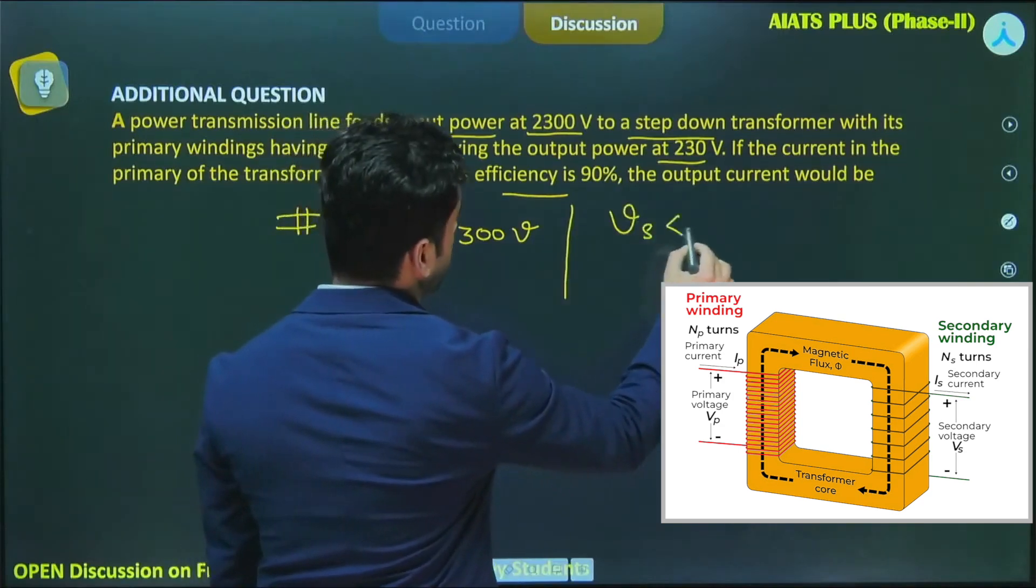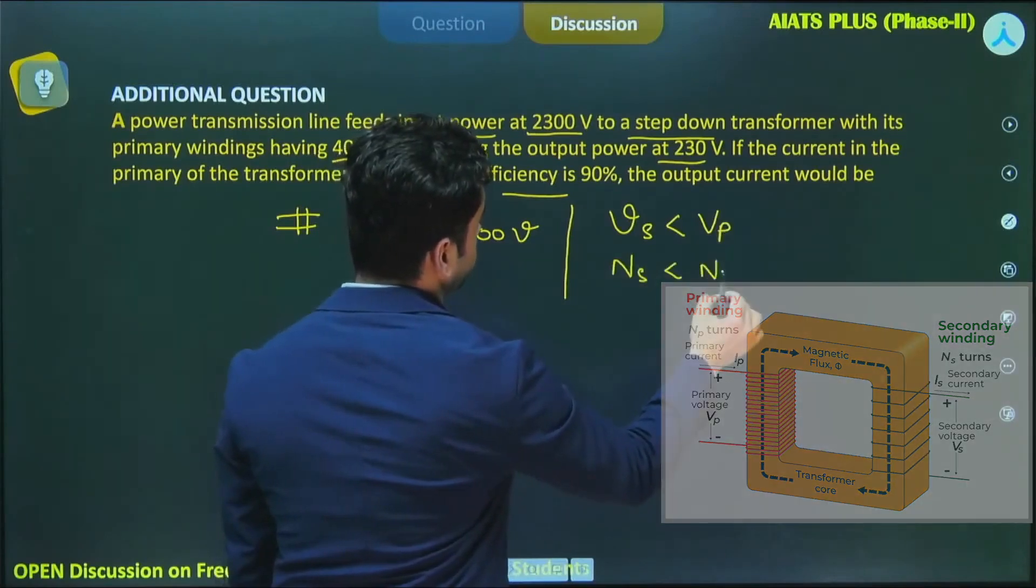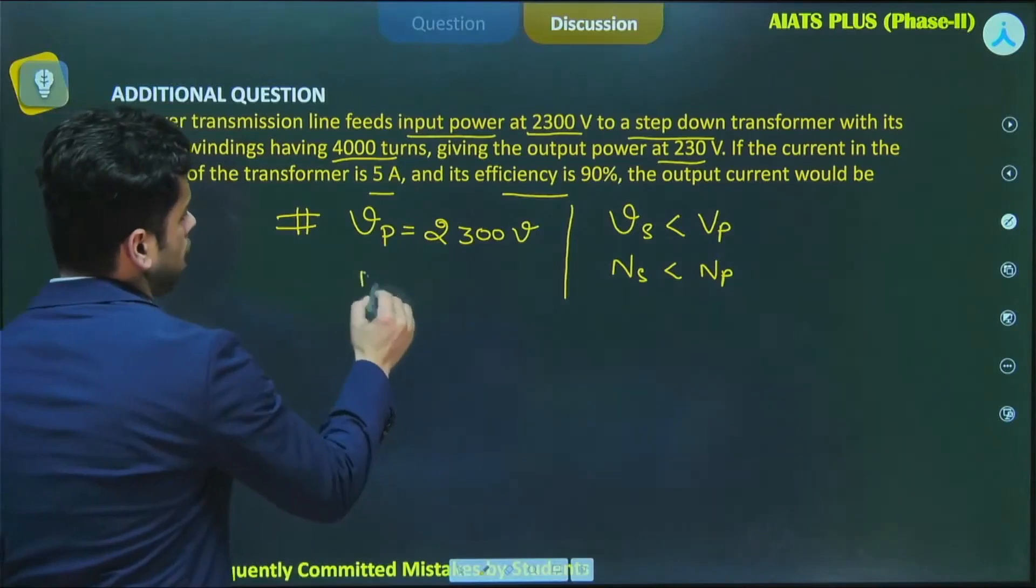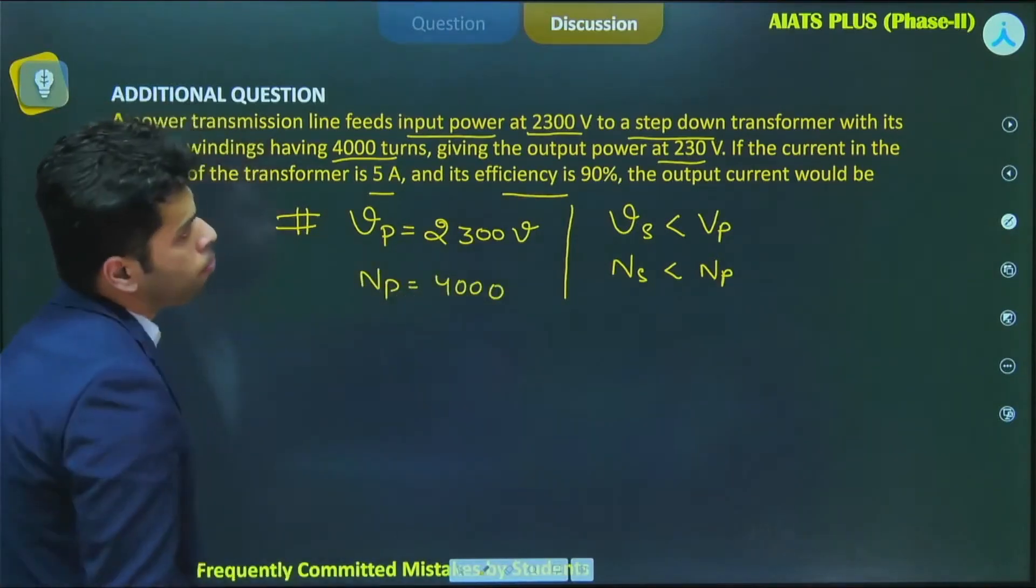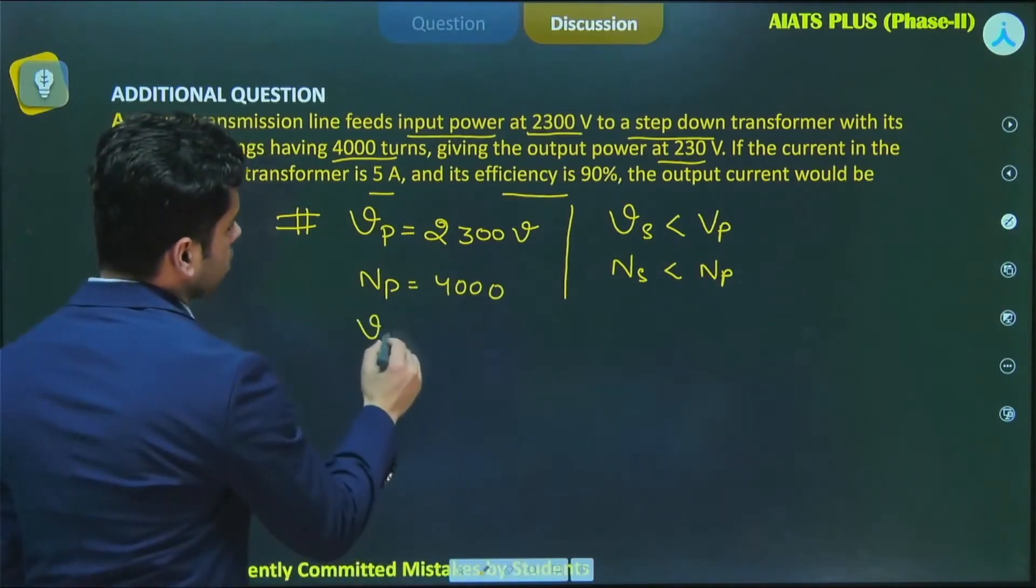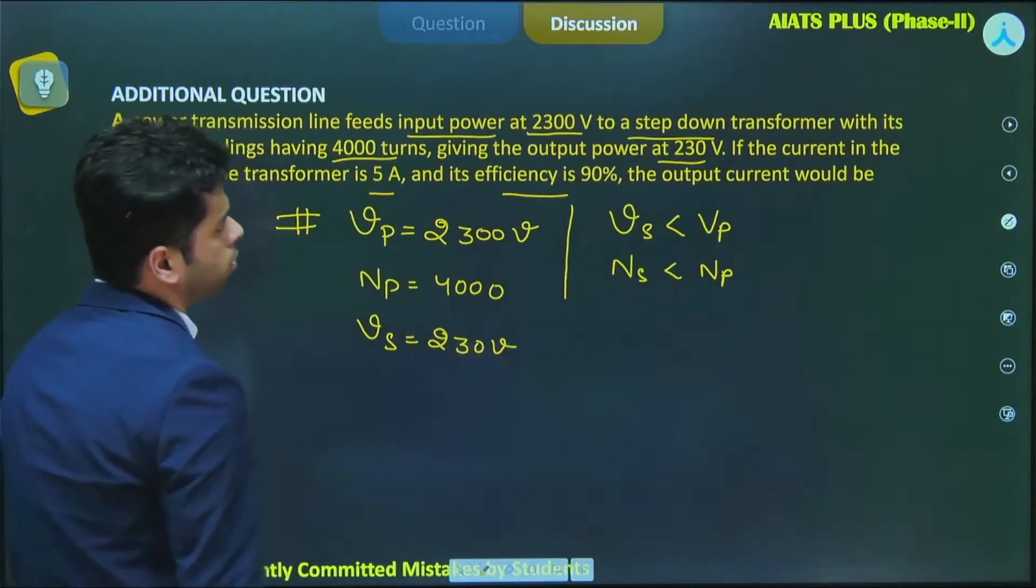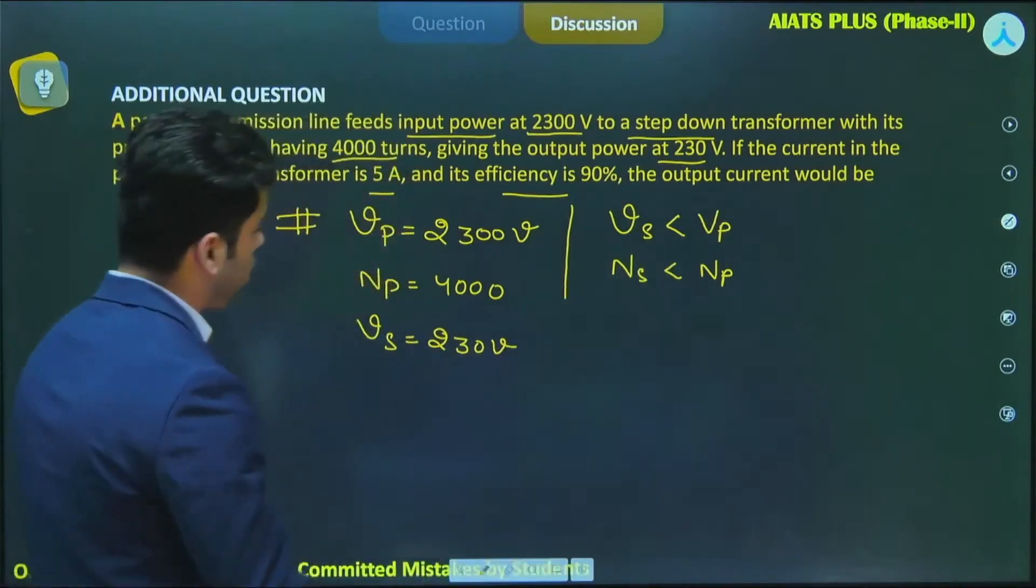Vp is 2300 volt. It is a step down transformer, so I can conclude that Vs should be less than Vp or Ns should be less than Np. With its primary winding having 4000 turns, so Np is 4000. Output power at 230 volt, so Vs is 230.